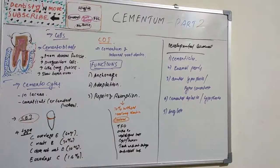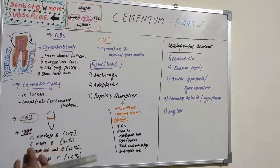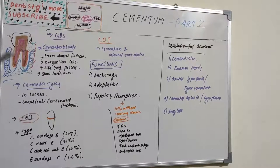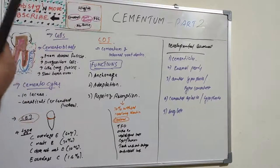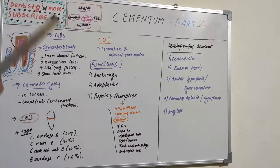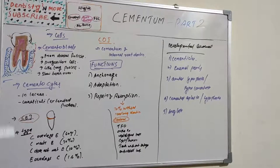Cementum has three basic functions: anchorage, adaptation, and repair. For anchorage, cementum furnishes a medium for the attachment of collagen fibers that bind the tooth to the alveolar bone — connective tissue attachment to the tooth is impossible without cementum. In hypophosphatasia, the cemental element is missing, leading to loosening and premature loss of anterior deciduous teeth. Exfoliated teeth show an almost total absence of cementum, providing clinical evidence of cementum's anchorage role.